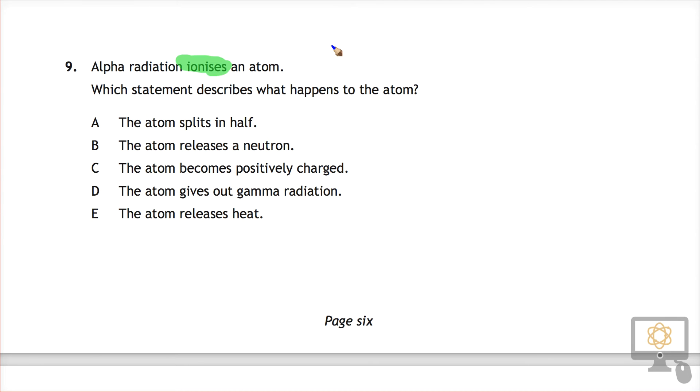So ionization is when an atom gains or loses an electron. And that commonly happens in radioactivity because alpha particles in this case are positively charged and they can rip electrons off other atoms nearby.